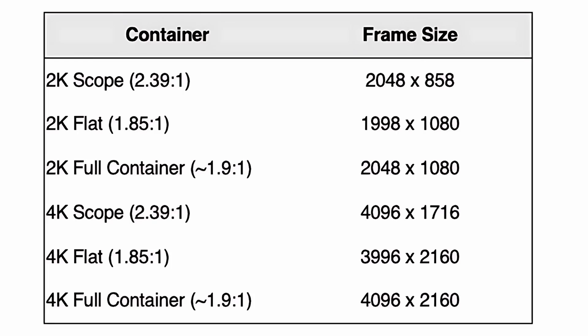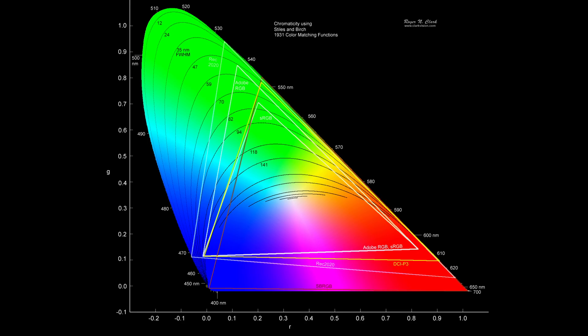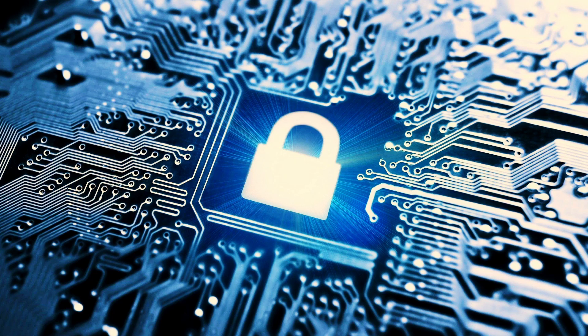Metadata such as the aspect ratio, frame rate, color space, and other technical details ensure accurate representation of your film in theatres. DCPs often employ encryption technology to safeguard copyrighted content and prevent unauthorized access to your files.